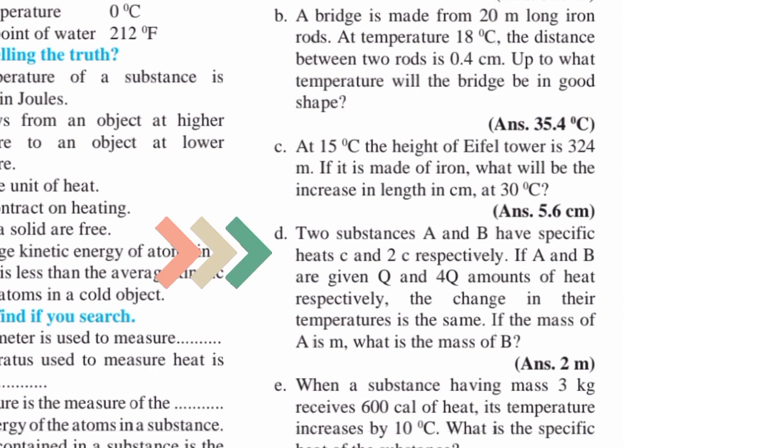D: Two substances A and B have specific heats C and 2C respectively. If A and B are given Q and 4Q amounts of heat respectively, the change in their temperatures is the same. If the mass of A is M, what is the mass of B?